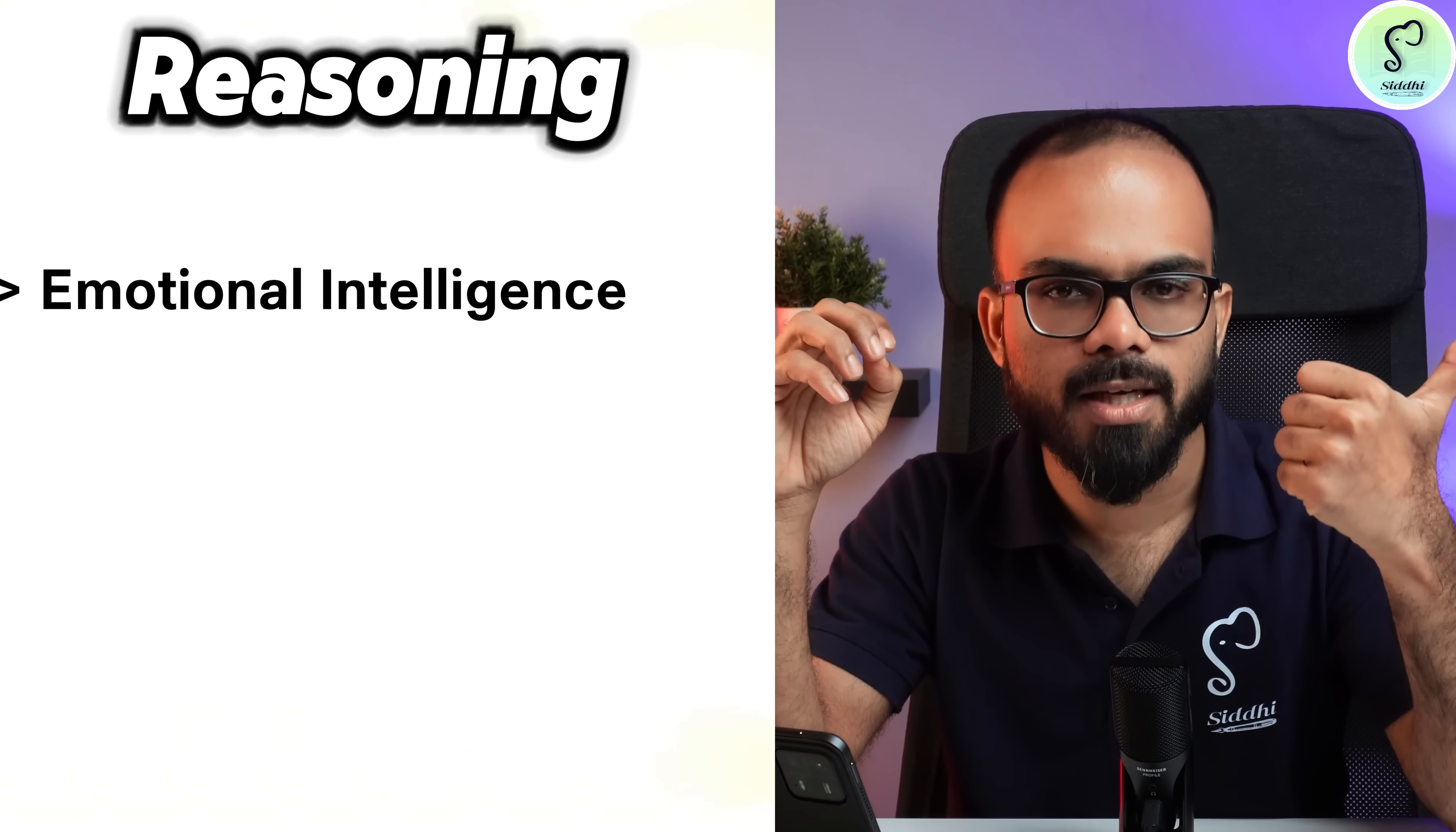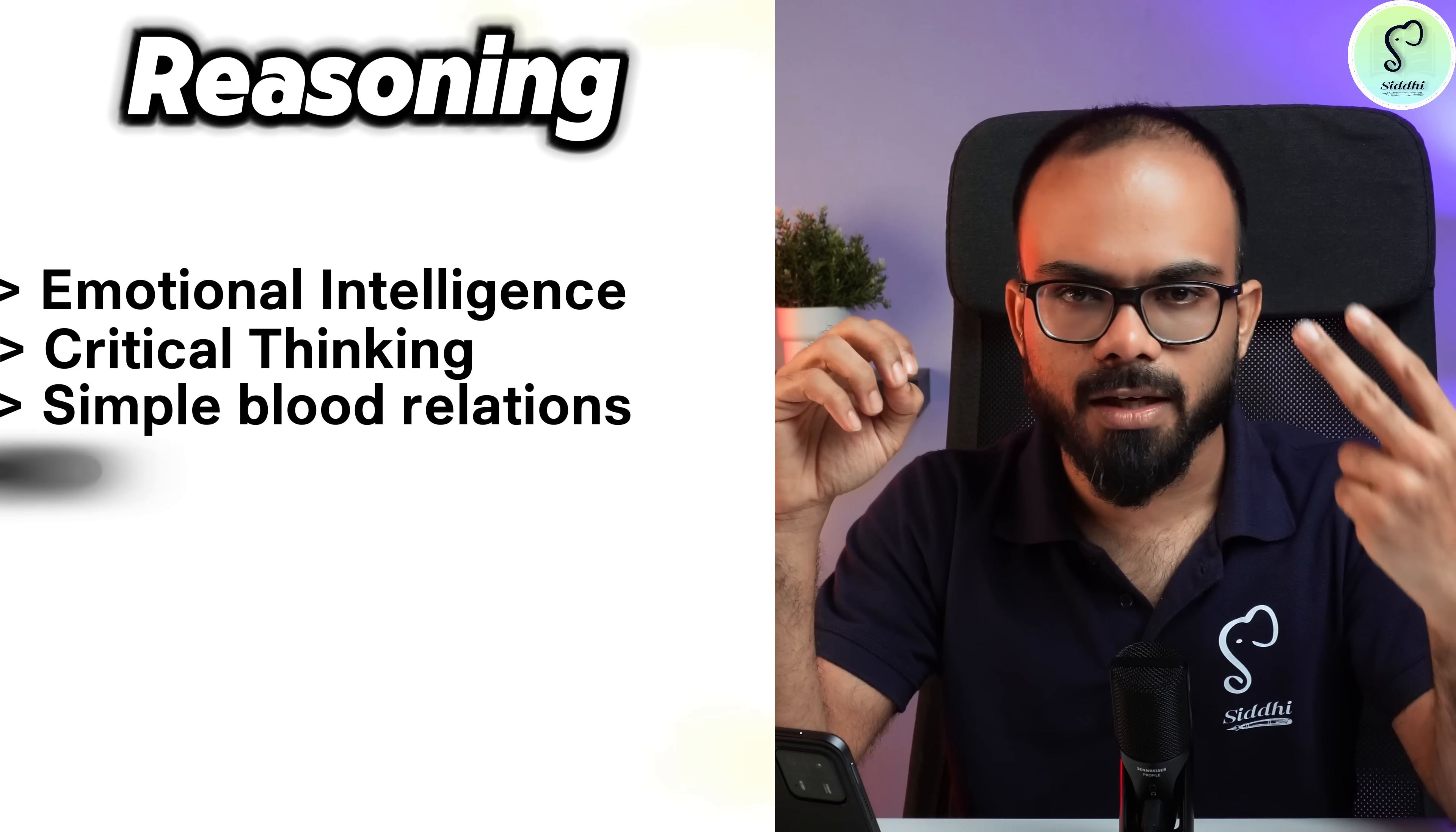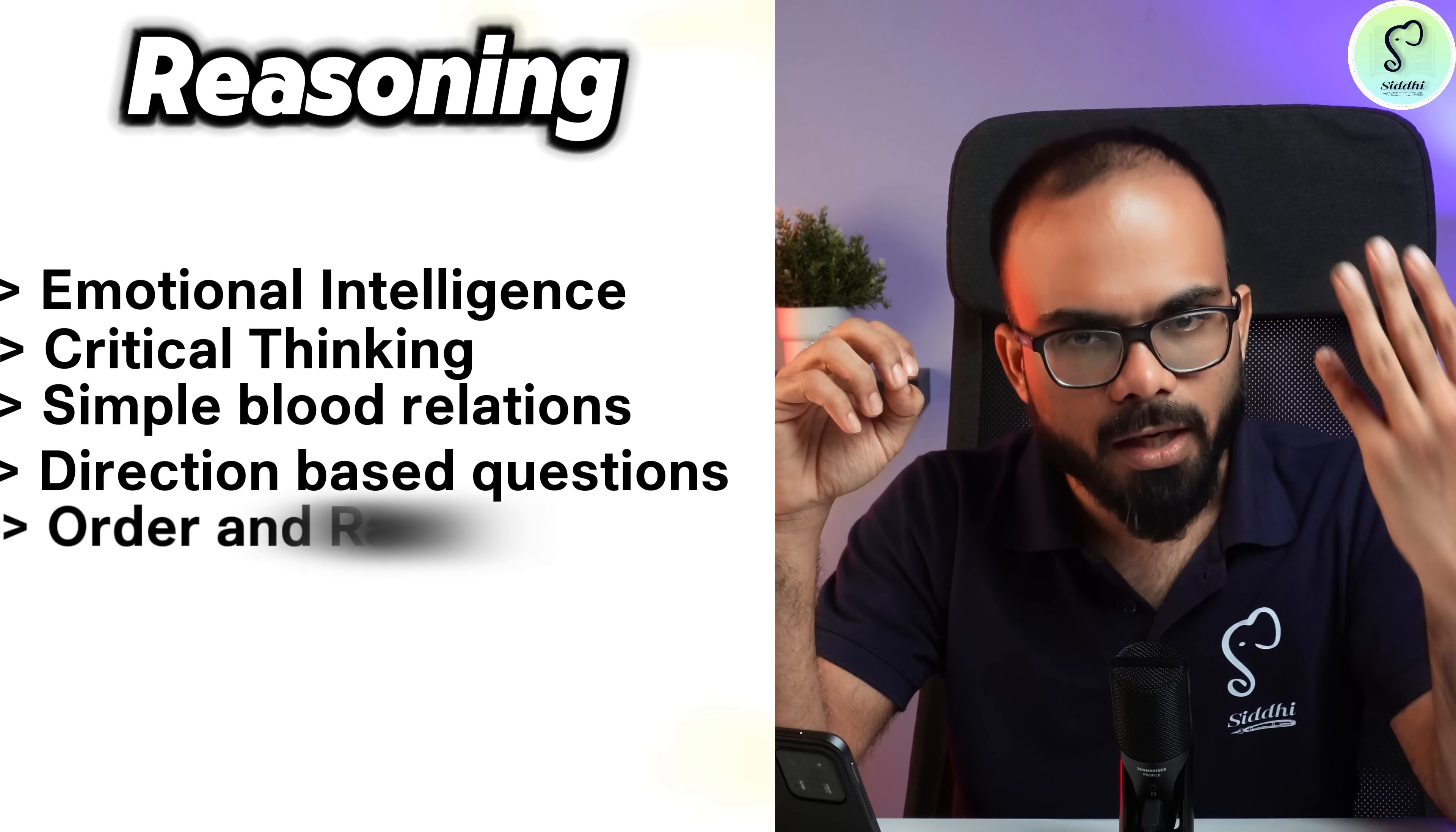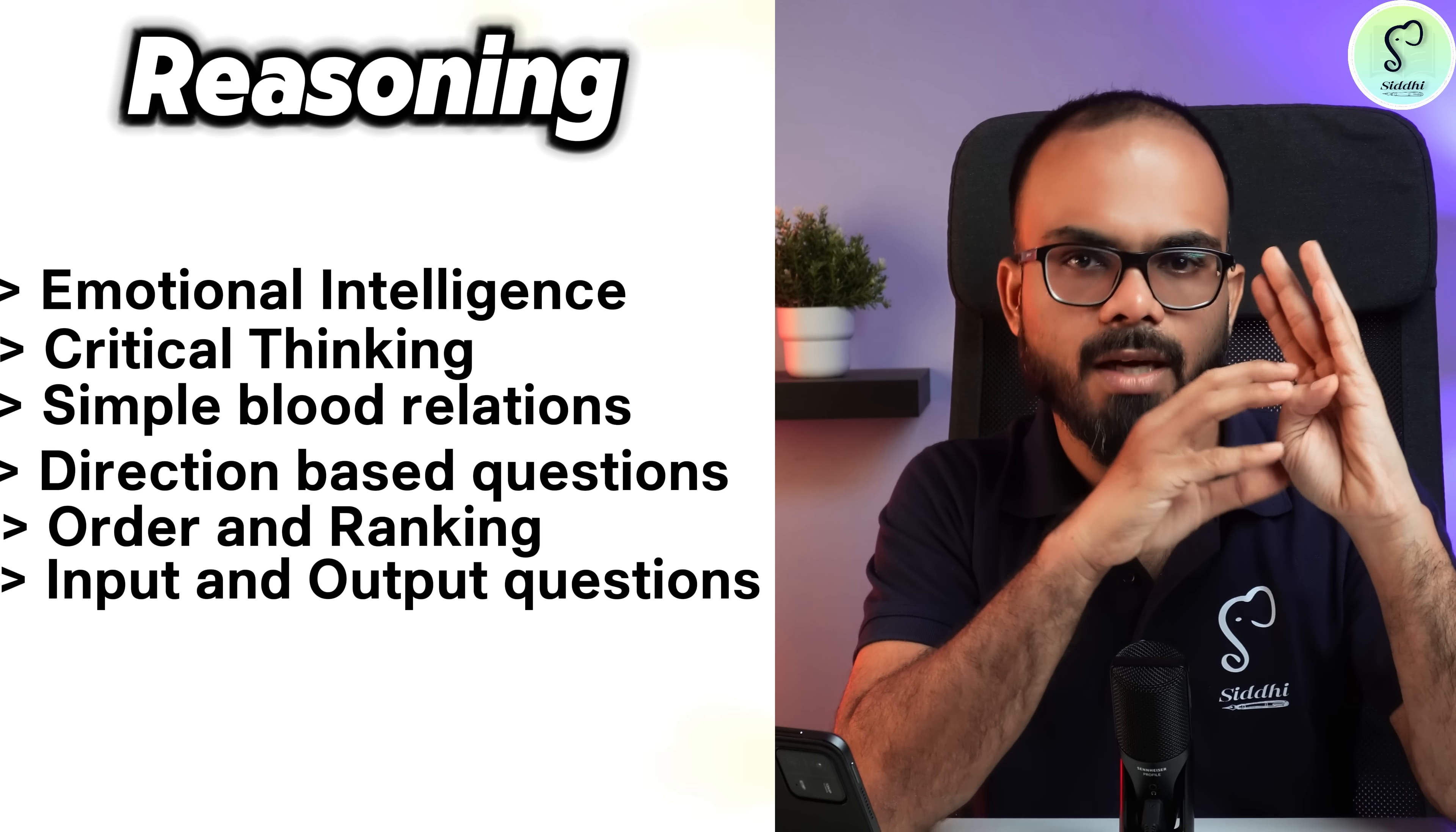So instead of running behind these difficult questions which are going to eat up your time, be good at emotional intelligence, critical thinking, simple pointing to a picture type of blood relations, regular direction-based test, order and ranking, input and output type of questions. These questions are extremely easy and doable provided you have the right kind of practice. My suggestion for you all is: first finish all these topics, then you go to difficult topics.